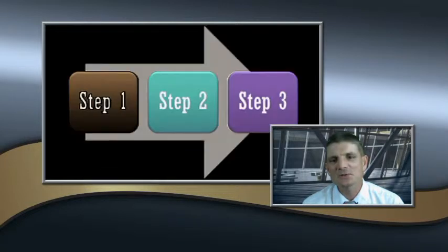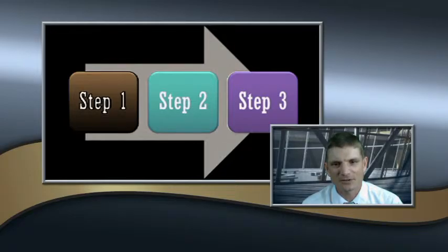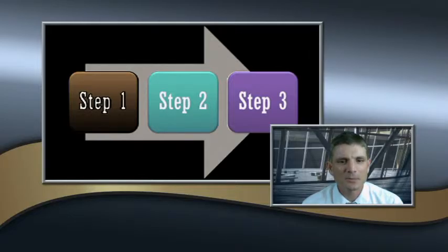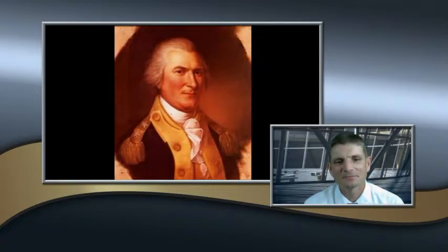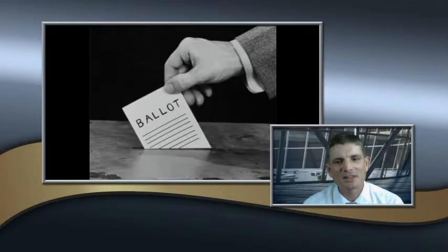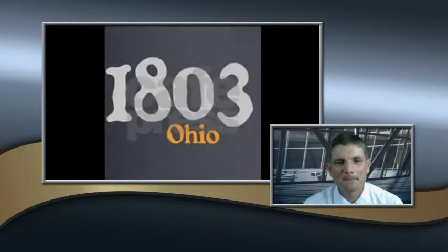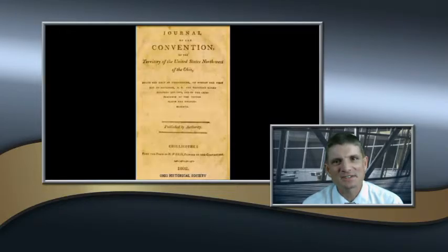The Northwest Ordinance also established a three-step plan for admitting states from the Northwest Territory, like Ohio, to the United States. First, Congress would appoint a group of leaders to govern people in the territory. Within a minimum population, the people of the territory could elect political leaders to govern them. When the population of the district was large enough, it could be admitted as a state, like Ohio was in 1803.